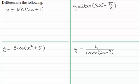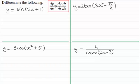Hi there. What I want to do in this tutorial is extend the work we've been doing on the chain rule. If you're unfamiliar with the chain rule, do go back and look at the first tutorial in this series. By now you should be familiar with the chain rule: dy/dx equals dy/dt times dt/dx, where t is some function of x.